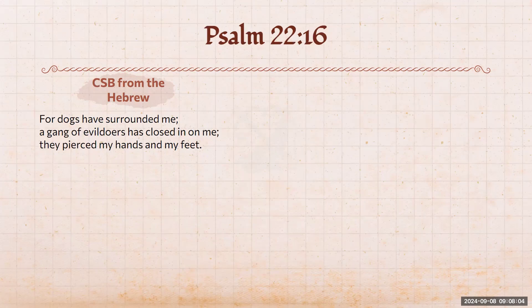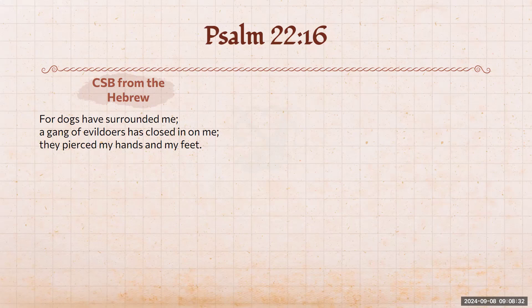This is a textual variant we're going to get into. Psalm 22:16, read from the CSB — representative of nearly all English translations — says: 'For dogs have surrounded me; a gang of evildoers has closed in on me; they pierced my hands and feet.' Most of you recognize Psalm 22 immediately as a messianic psalm — a prophecy about Christ. You're very familiar that this is a direct reflection of what will be the crucifixion: 'they pierced my hands and feet.' You can't read that and not think crucifixion. Or can you?